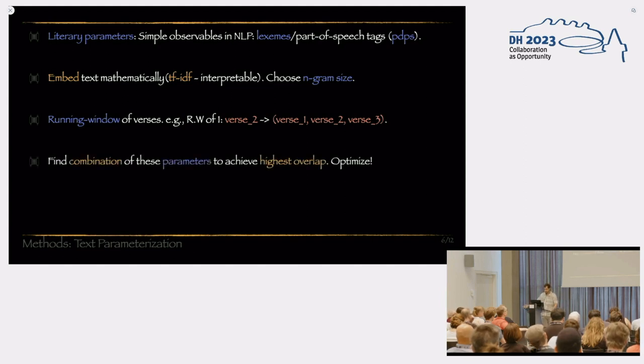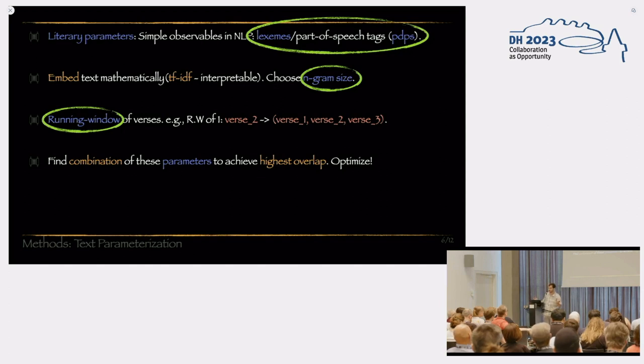And then our goal is essentially to find a combination of these parameters that would achieve the highest overlap, that would achieve the highest agreement with the hypothesized P non-P partition, right? This is an unsupervised exercise. So, at no point does the algorithm know of the hypothesized partition, but we simply compare the results with that.